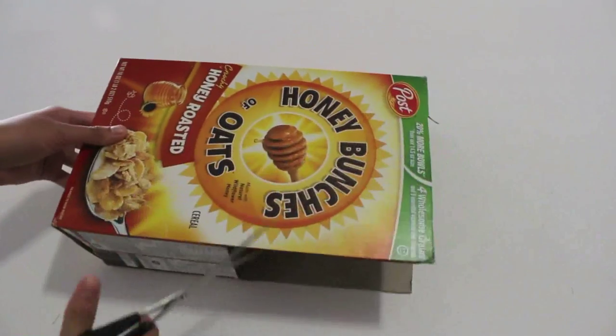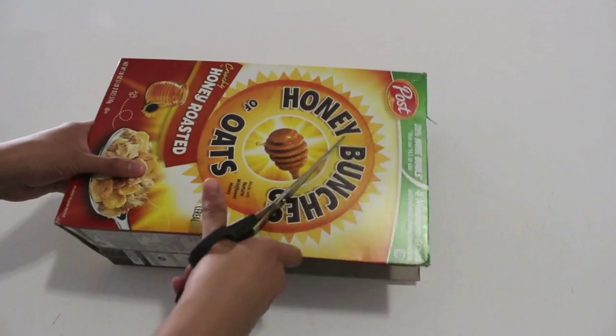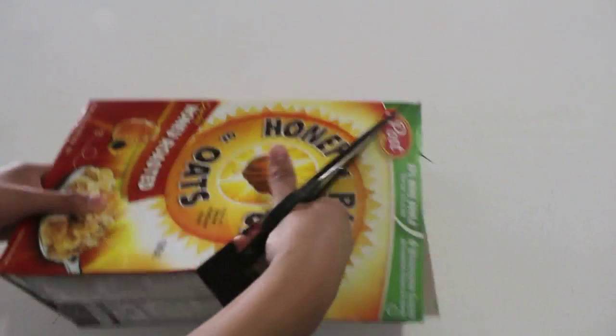Now we are going to make diagonal cuts on the faces that haven't been touched yet, starting from the top corner of the short face to the high corner of the face parallel to it.